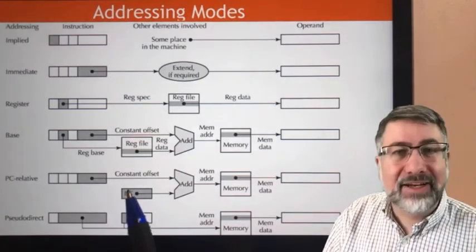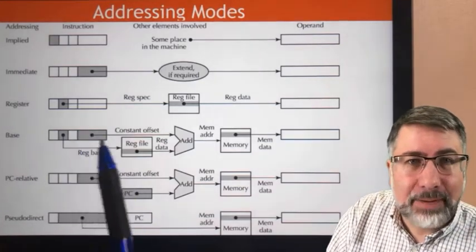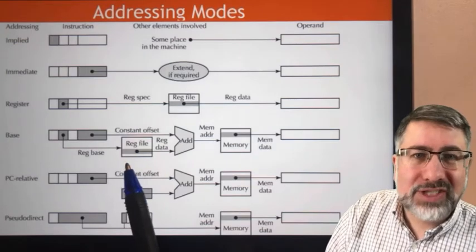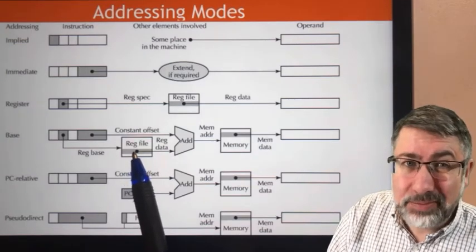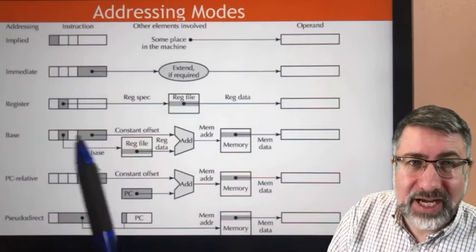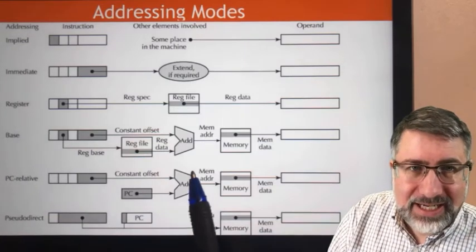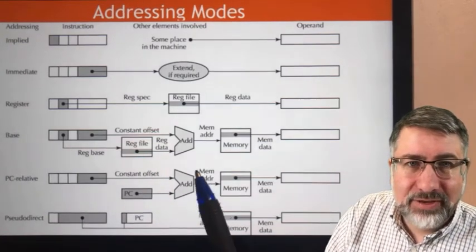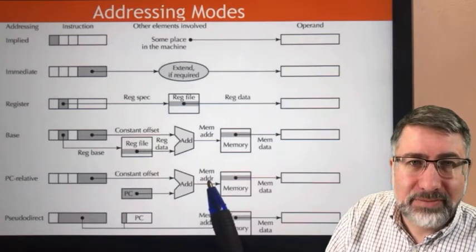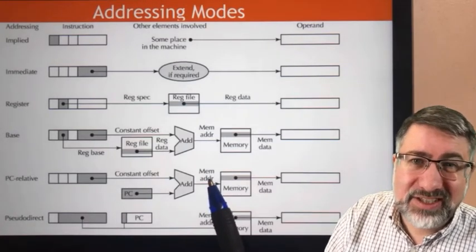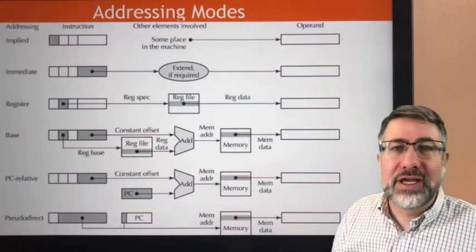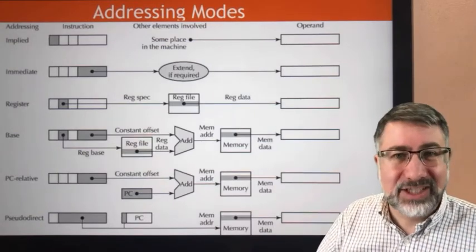PC relative, again, very similar. But instead of looking up a register in the register file, we just take the program counter. So it's actually one step less complicated than the base plus offset addressing mode. The program counter is added to an offset, then that produces a memory address. In this case, it's an instruction memory, so it's a little bit different. But then the operand is our next instruction.